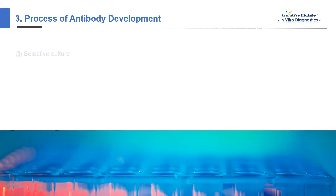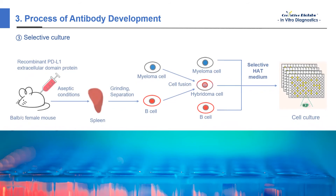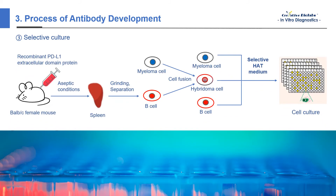The purpose of selective culture is to screen fused hybridoma cells. After fusing, cells were cultured in HAT selective medium. Unfused myeloma cells cannot survive in the medium due to the lack of hypoxanthine guanine phosphoribosyl transferase. Simultaneously, lymphocytes also die due to their inability to survive in vitro for long periods of time. Therefore, only fused hybridoma cells can survive in this selection medium.